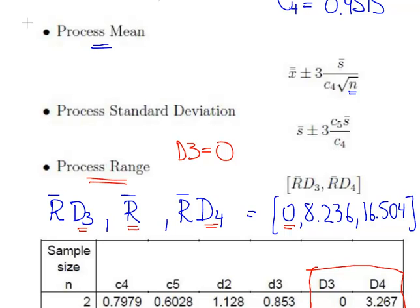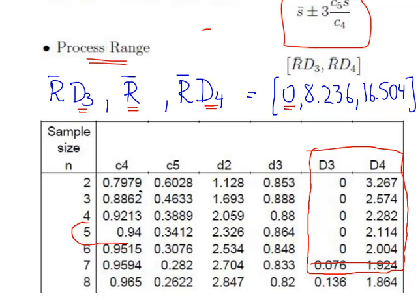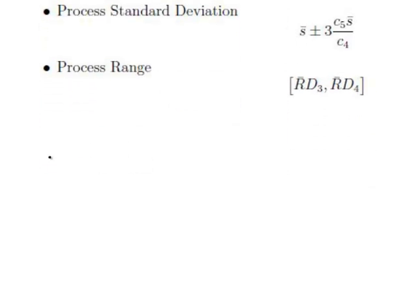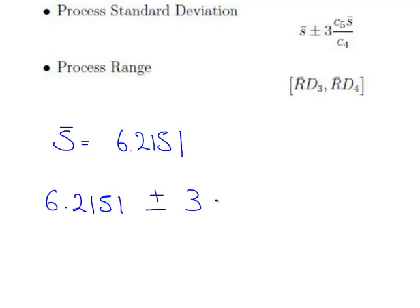What do we need? This is the one in particular that we need to look at: S bar plus or minus 3 times C5 over C4 times S bar. This should be straightforward enough. Remember that the batch size here is equal to 6. So this is the two values we want: 0.9515 and 0.3076. S bar is 6.2151. The control limits are 6.2151 plus or minus 3 times 0.3076 over 0.9515 times 6.2151.